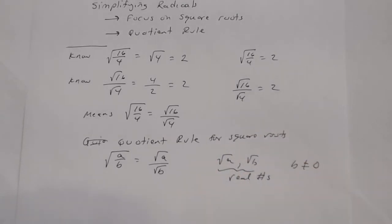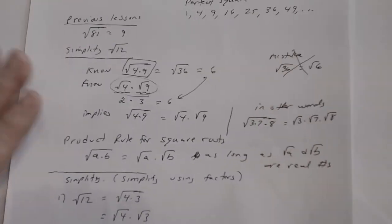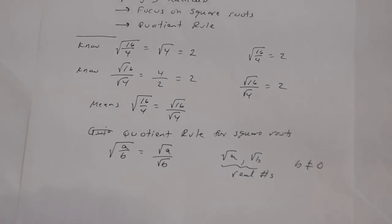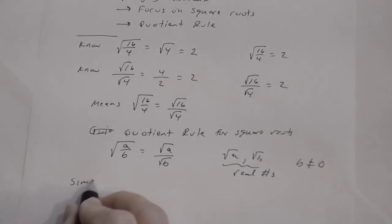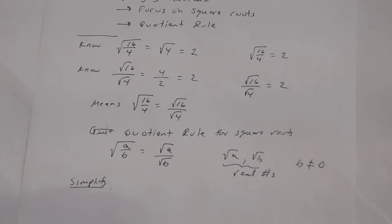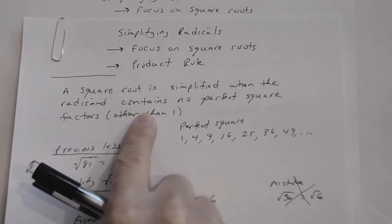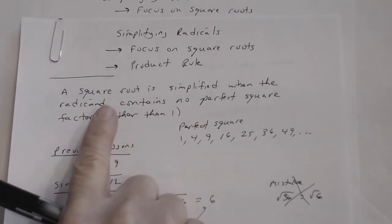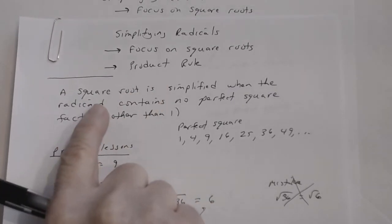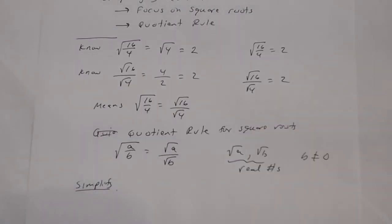We talked about the product rule for square roots in the previous lesson, and knowing that lesson will help you with this one because it's basically the same idea. Keep in mind that a square root is simplified when the radicand contains no perfect square factors other than one — that idea from the previous lesson still applies here, so you have to make sure your radicand is as simplified as it can be.